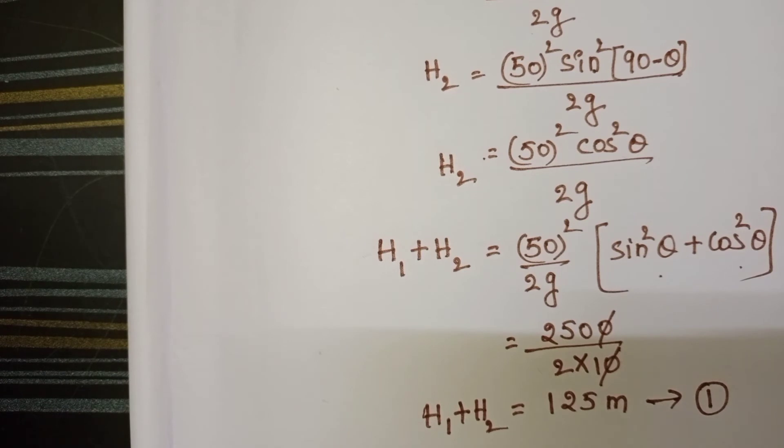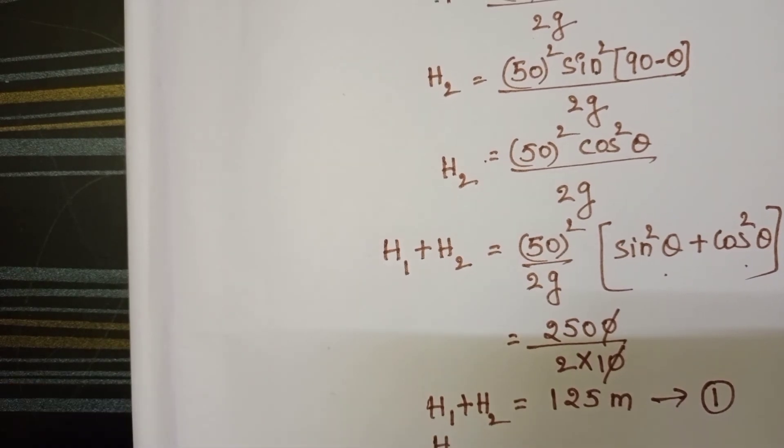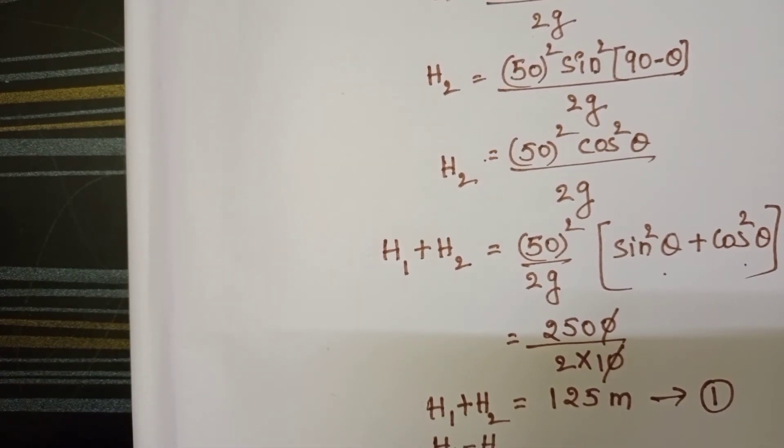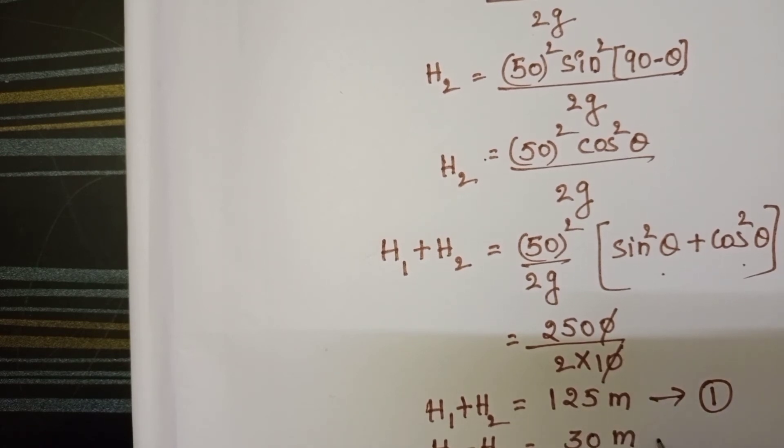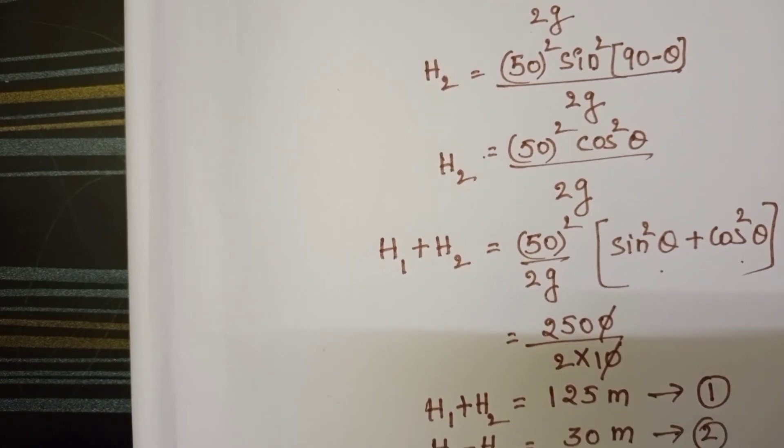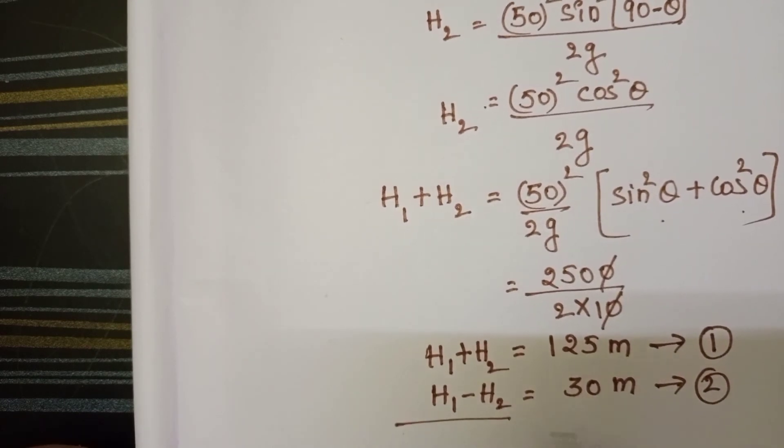And the difference of heights, H1 minus H2 equals 30 meters. From equations 1 and 2, simplify these two equations.